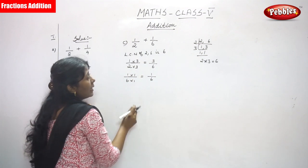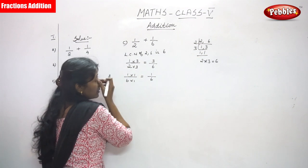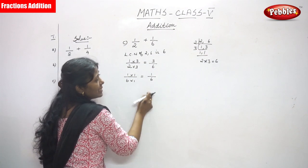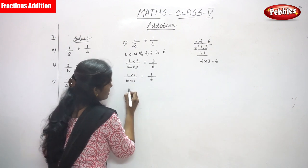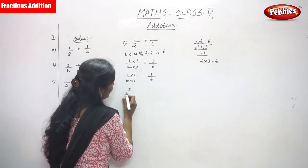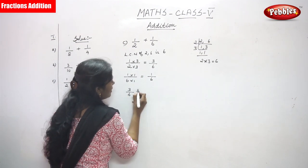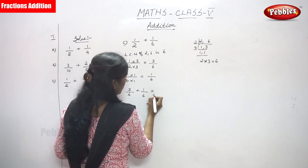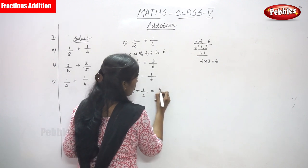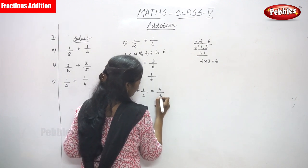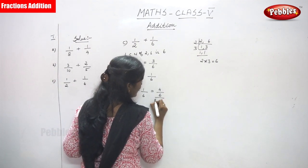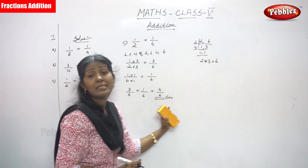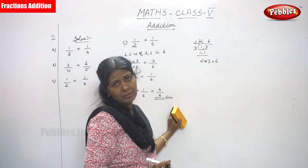Now I am going to do the addition because the denominators are the same. If the denominators are the same, I add the numerators: 3 plus 1 is 4. The answer is 4 by 6.